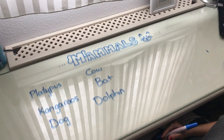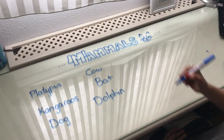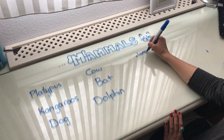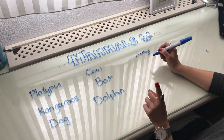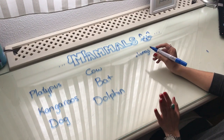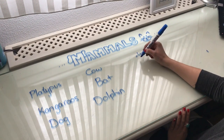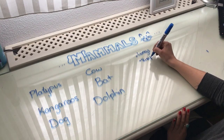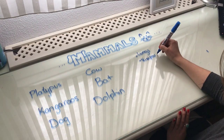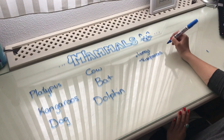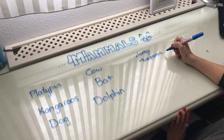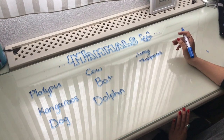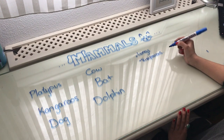Something we can say about mammals is that they all breathe with lungs, and most of them — be careful — only most of them are viviparous. Do you remember what viviparous means? Viviparous animals are the ones whose offspring are born from the mother's womb.